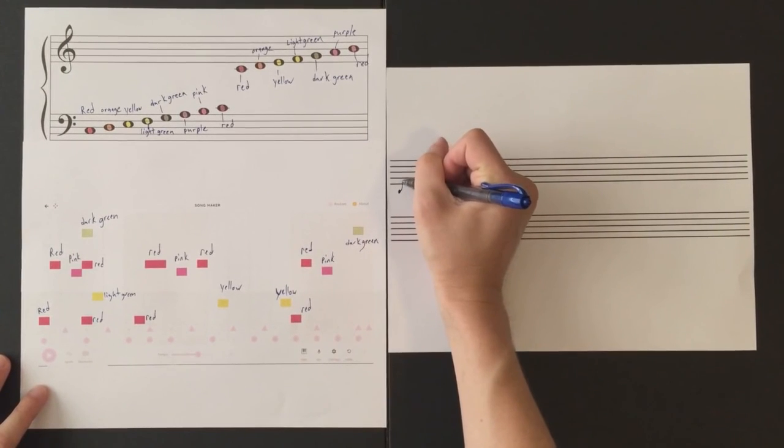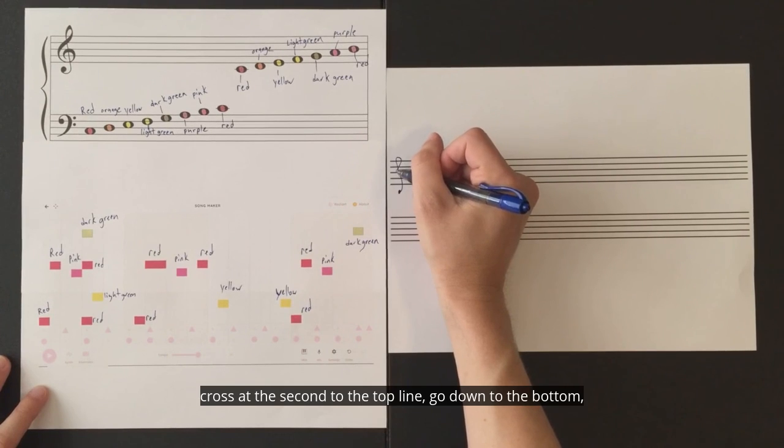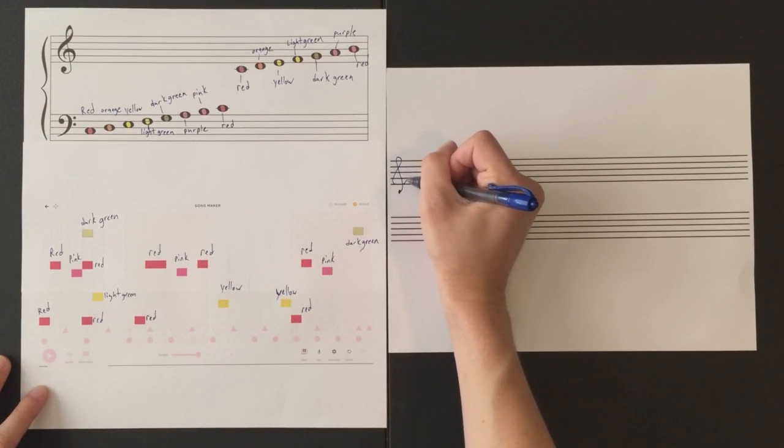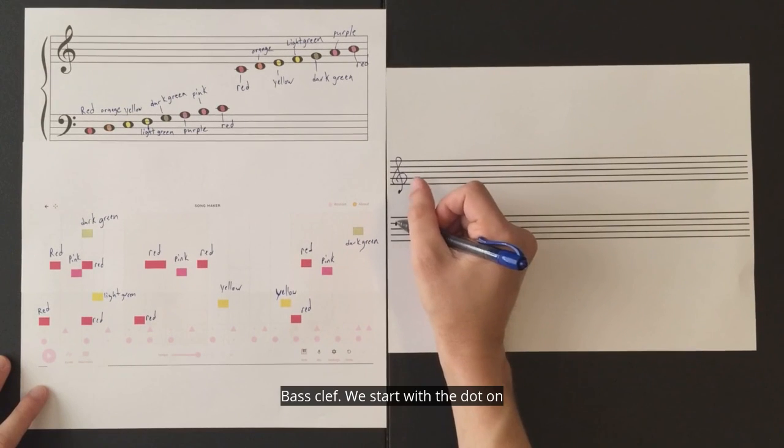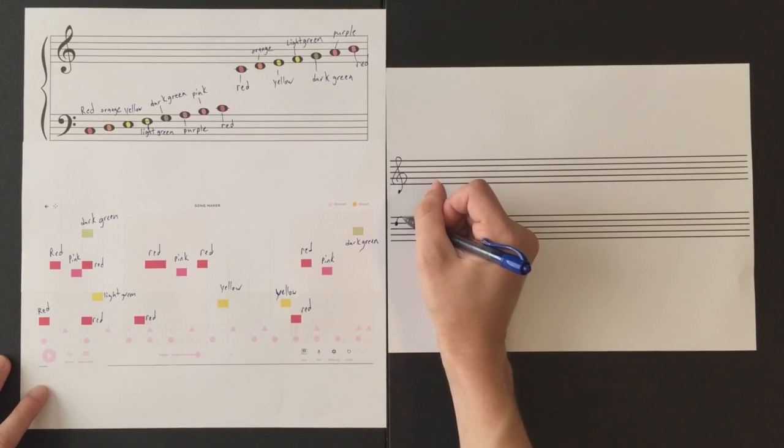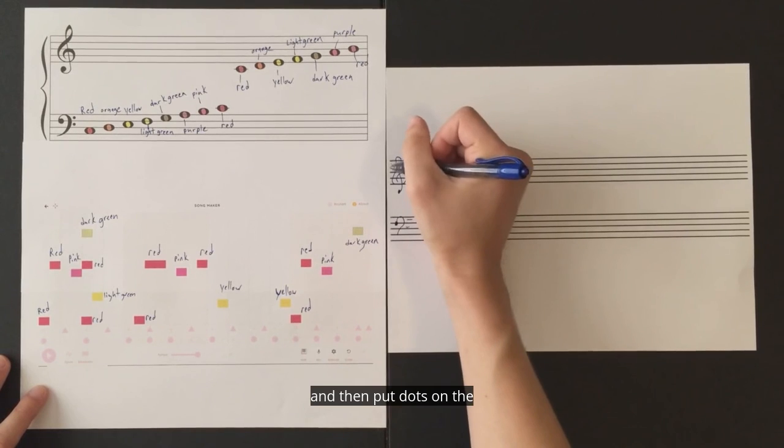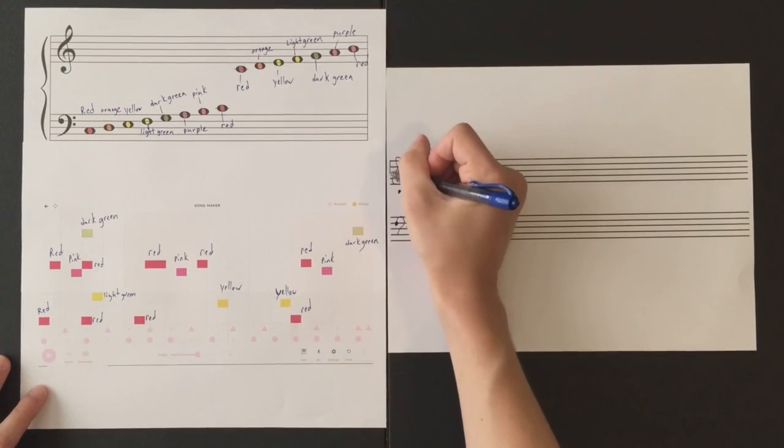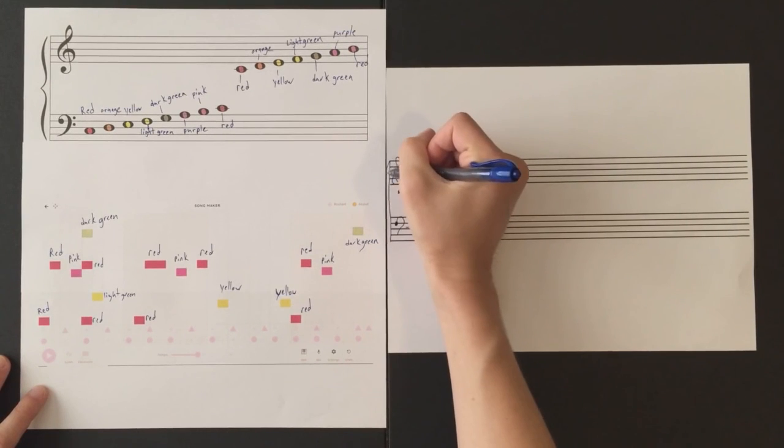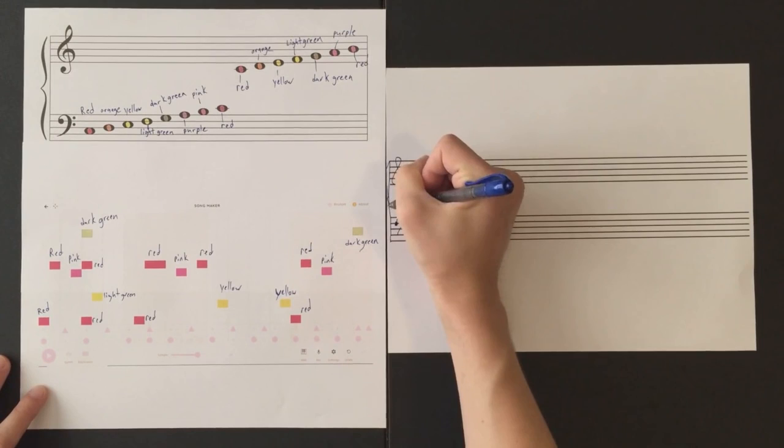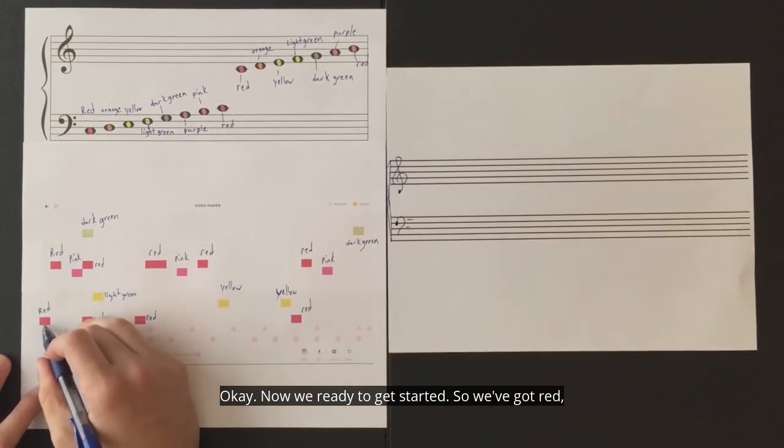We start with the dot below the staff, go up above the staff, cross at the second to the top line, go down to the bottom, come up to the middle line, and cross over to the second to the bottom line. Bass clef, we start with the dot on the second to the top line, go up and then down, and then put dots on the two top spaces. And then we're going to draw a line like so for the bar line, and then draw a bracket. Okay, now we're ready to get started.